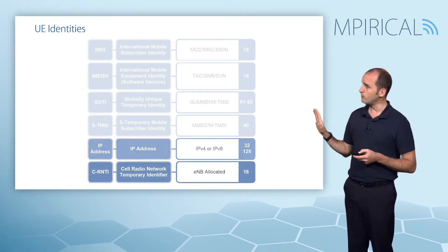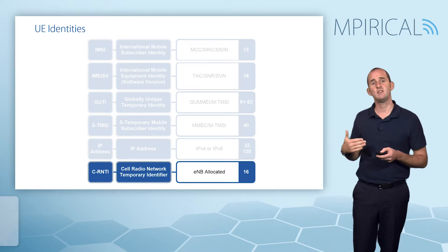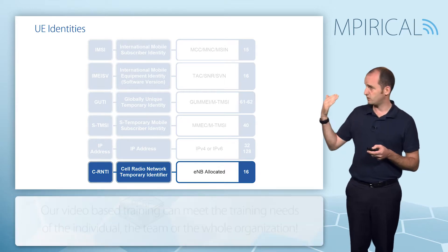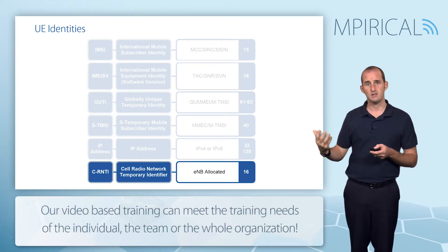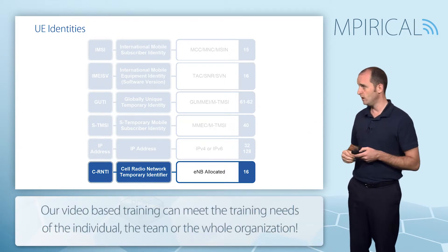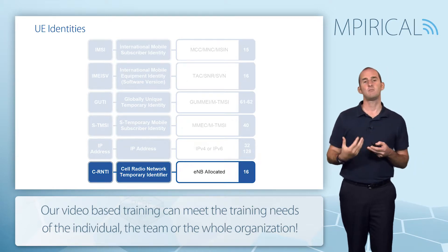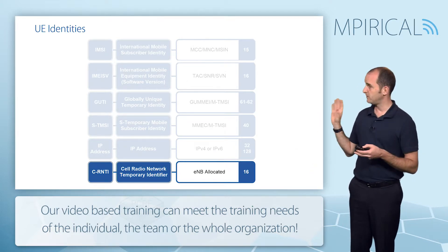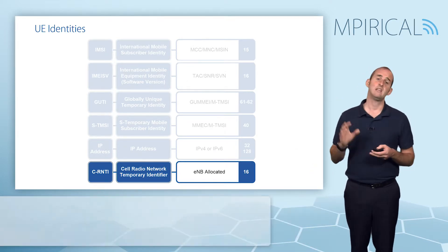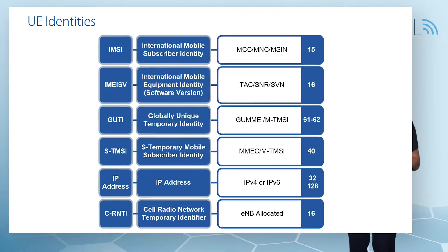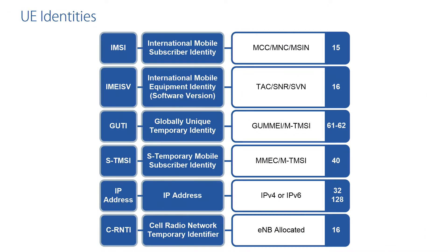On a more local basis, between the device and the actual cell that we're connected to — the eNodeB — you will also have a Cell Radio Network Temporary Identity (C-RNTI). This is administered by the eNodeB. So there are a variety of different identities through which the user equipment, or indeed the subscriber, is identified.